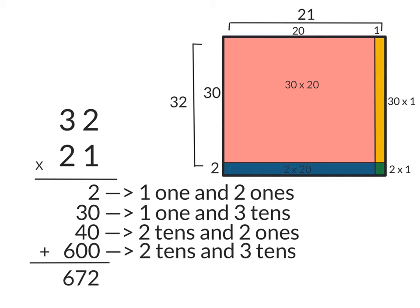We can also use this diagram over here to demonstrate why there are 4 parts to this problem. So when we multiplied the 1 by the 2, that was just 1 1 by 2 1's. And that is represented by the green box down here.